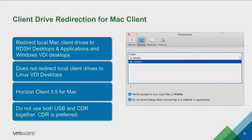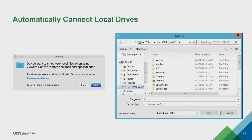In the Mac client preferences, you can simply add the folders you want to be redirected — a folder in your user directory, a network drive, or a USB drive. When you log in for the first time you'll see a dialog asking if you want to share your local files with your remote desktops and applications. The user can tick 'don't show this again.' You can also go into preferences and sharing to edit those settings afterwards. In an RDSH session you'll have your home directory on your local device redirected as well.